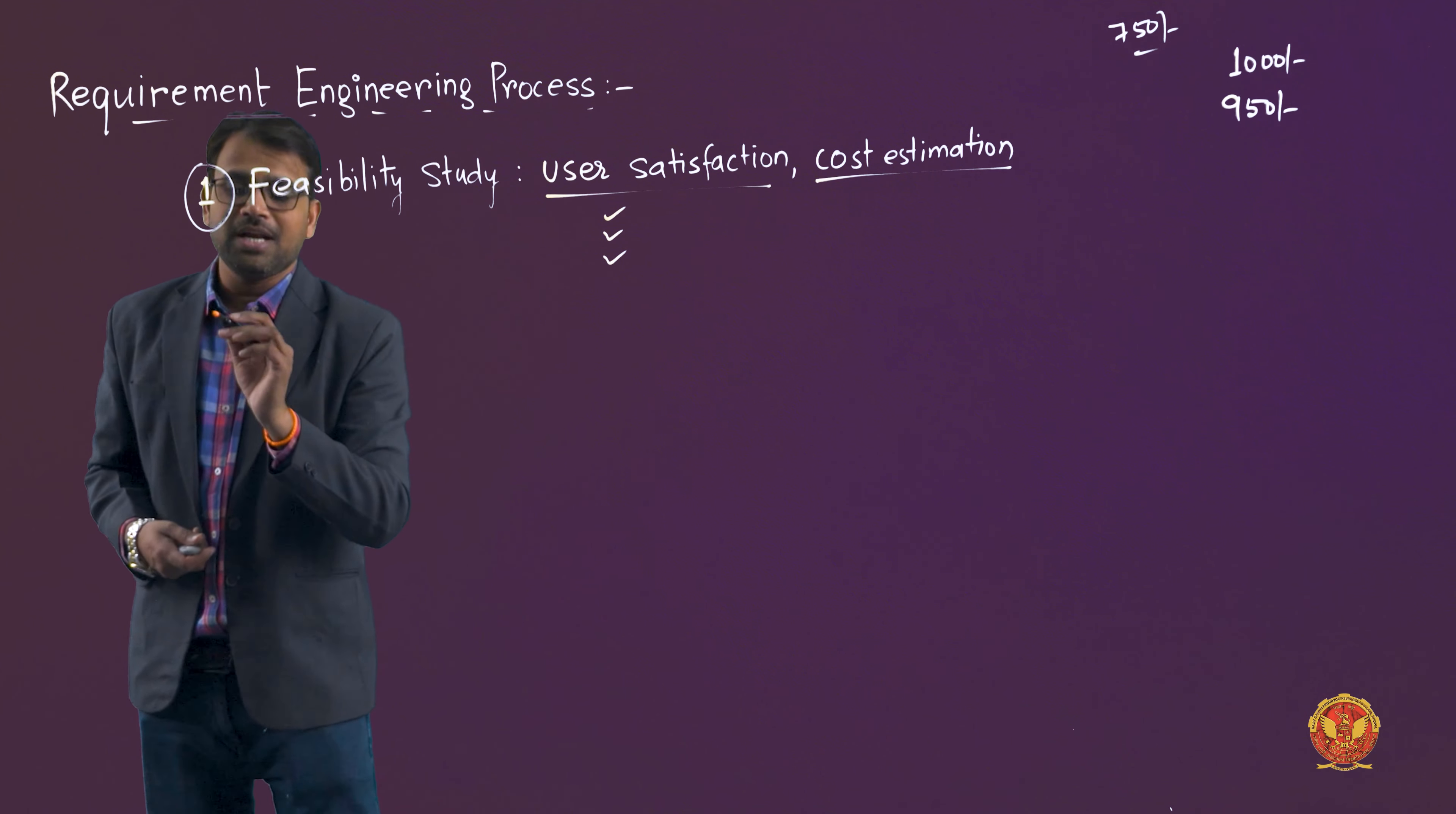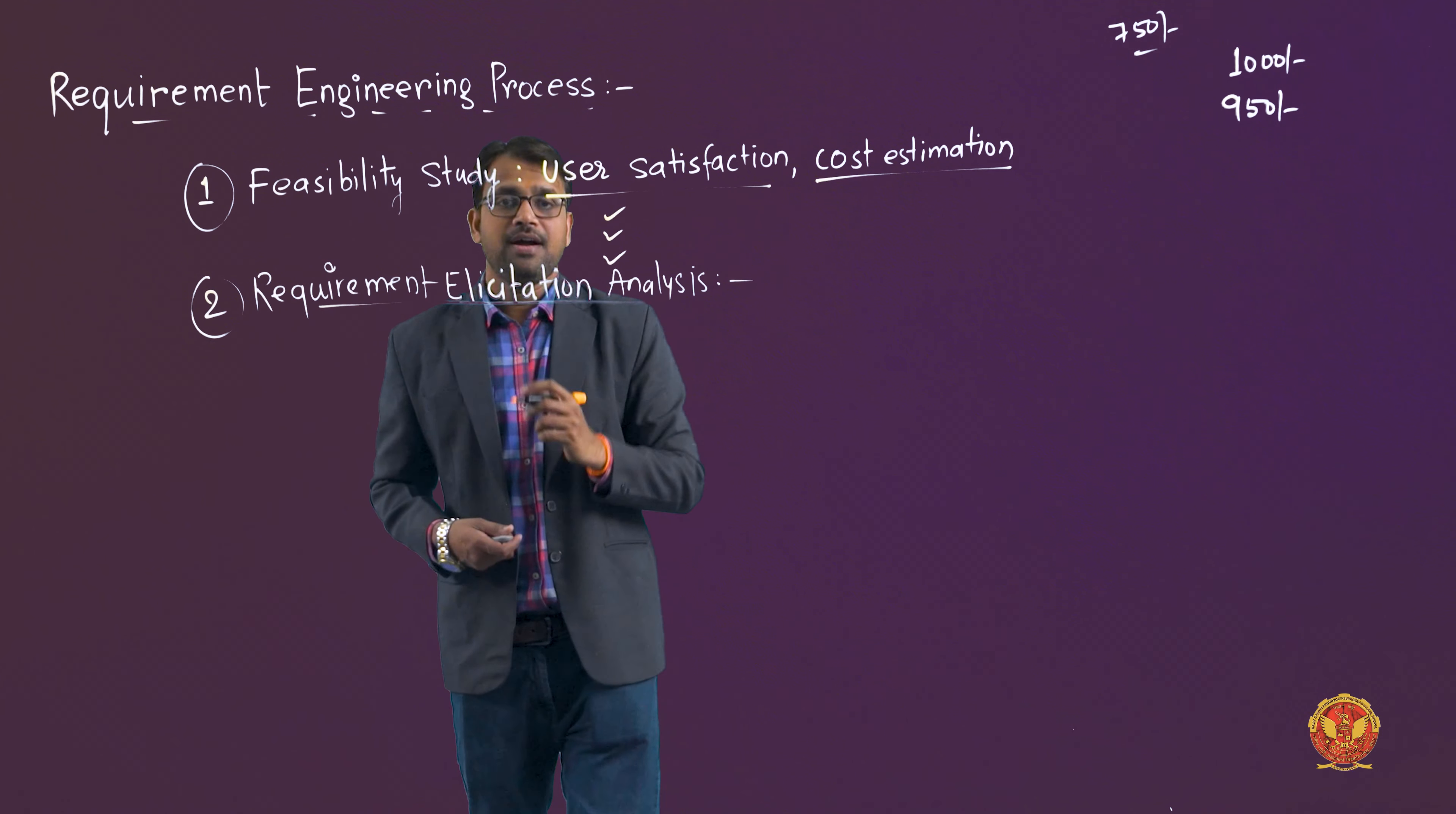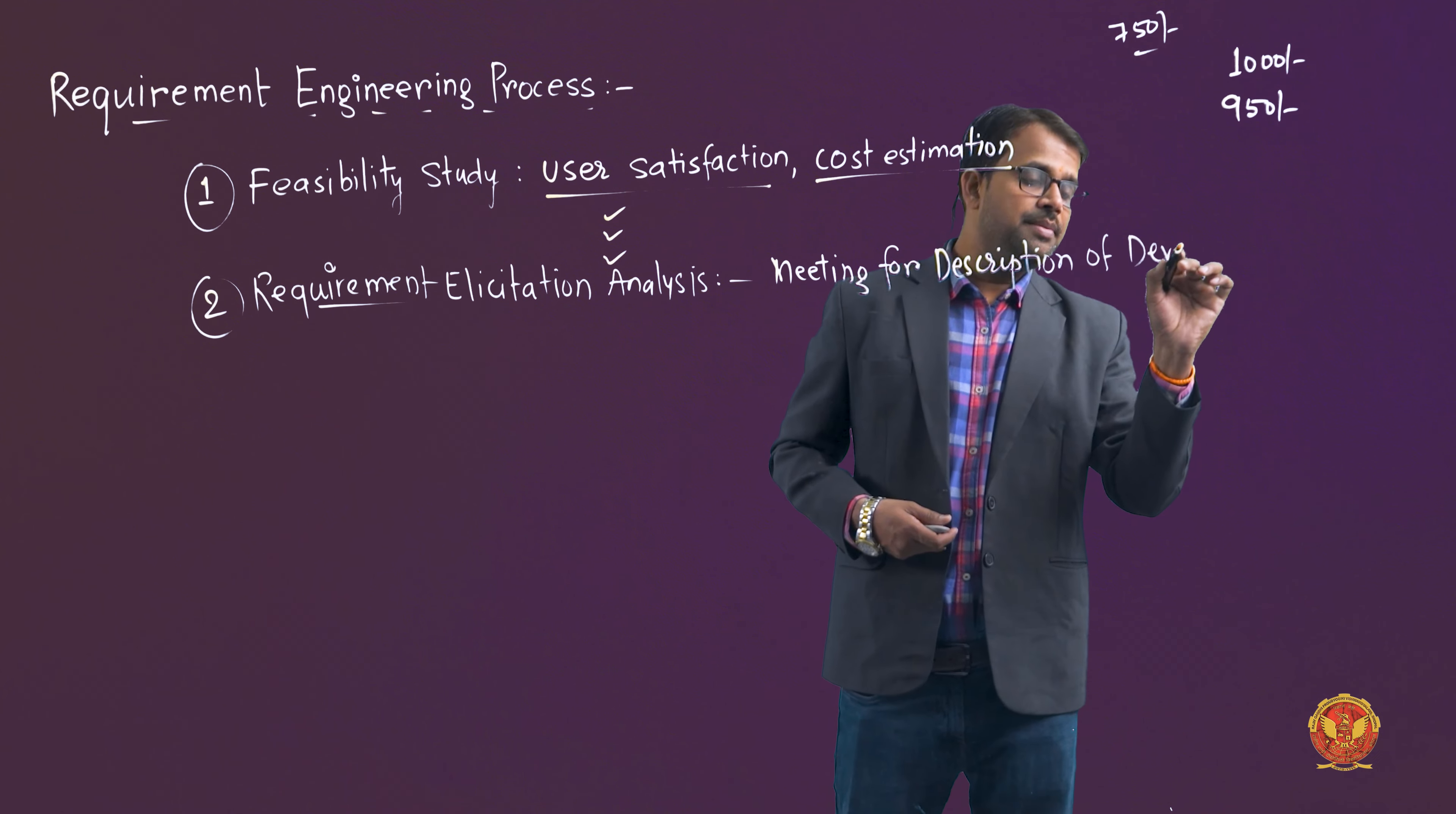The second part is requirement elicitation analysis. Elicitation means discovery. What does elicitation analysis mean? What you have discovered, how effectively you have identified the required things. So in requirement elicitation analysis, meeting for description of development - this activity is performed.